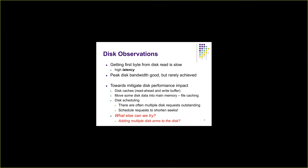The peak disk bandwidth is good but rarely achieved, because disk requests can be random. The operating system might ask to read block 1 and then block 512, which may be on a different track. Based on the type of requests going to the disk, the delay can be huge — that's why peak bandwidth is not achievable in practice.